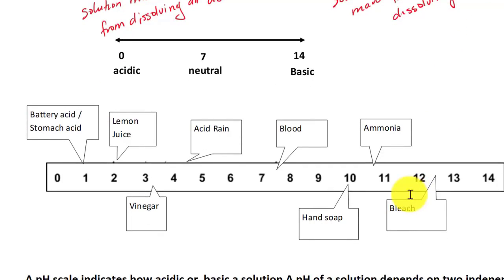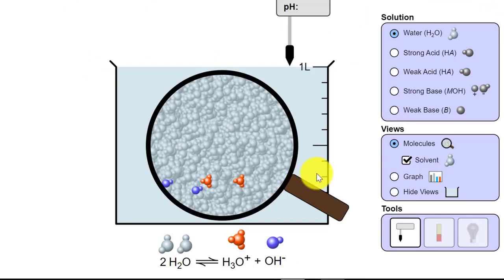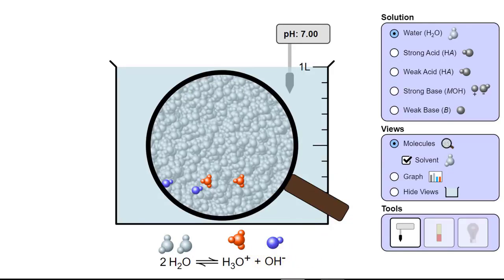Now let's look at the pH scale. Why do we care about the number seven so much? Because seven represents a neutral value — basically, the amount of acid and the amount of base are equal to each other. A common substance with a pH of seven is pure water. Looking at the simulation with pure water, the pH is at seven, and we have equal moles of H3O+ and OH-. So a pH of seven tells you that H3O+ must equal OH- in terms of moles.